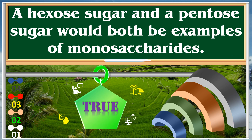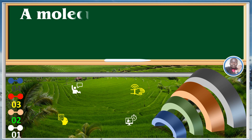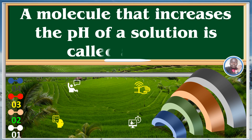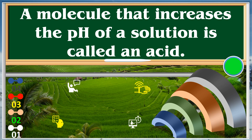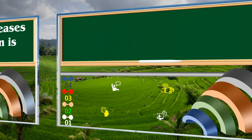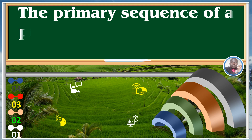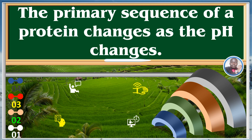A molecule that increases the pH of a solution is called an acid. True. The primary sequence of a protein changes as the pH changes. False.